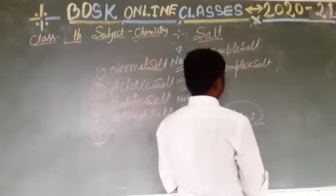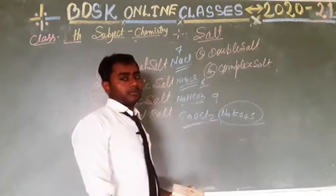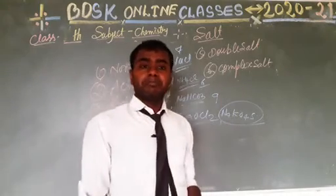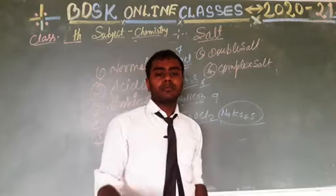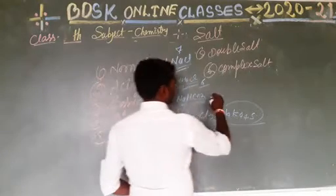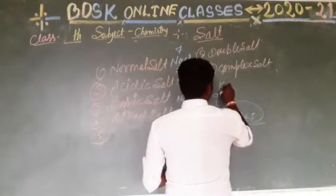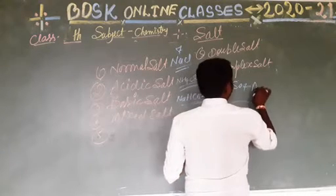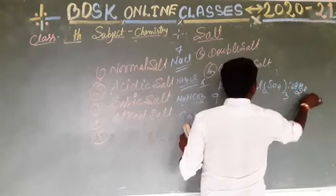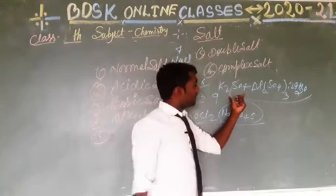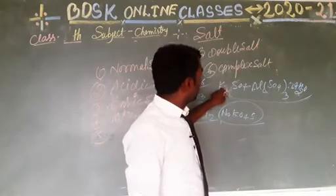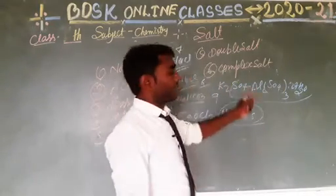Next is double salt. A double salt consists of two different salts. The example is Fitkiri (alum), and the formula is K2SO4·Al2(SO4)3·24H2O. This is Fitkiri, which belongs to double salt. The chemical name is potassium aluminum sulfate, and this is a hydrated form.